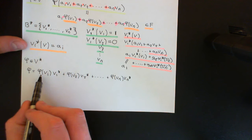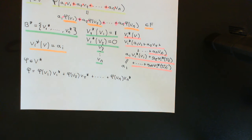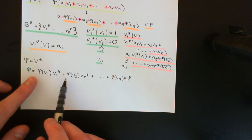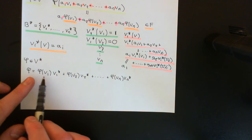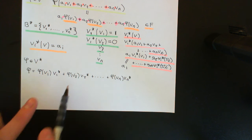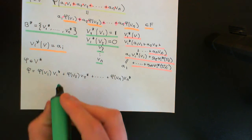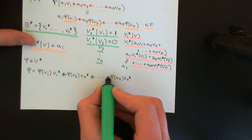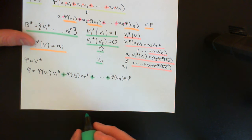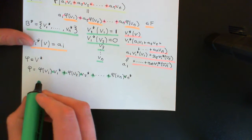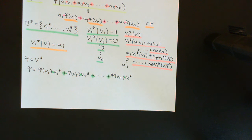All you need to know is where phi sends all of the basis vectors in the original vector space V — those elements of the field become the scalar coefficients in front of the dual basis vectors. I should stress that all the additions and scalar multiplications here are done in the dual vector space.